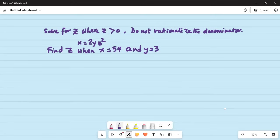Solve for z where z is greater than zero. Do not rationalize the denominator. x is equal to 2yz squared. Find z when x is equal to 54 and y equal to 3.